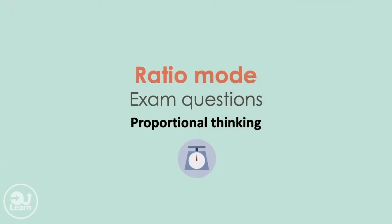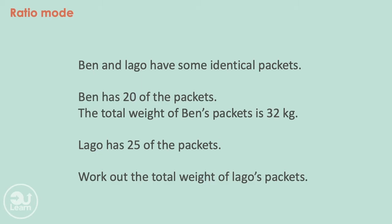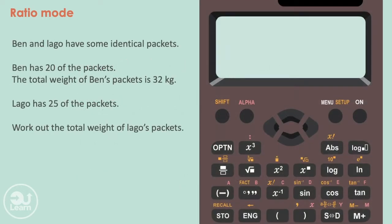Moving on to our next type of question, which is further proportional thinking. Ben and Largo have some identical packets. Ben has 20 of these packets. The total weight of Ben's packets is 32 kilograms. Largo has 25 of the packets. Work out the total weight of Largo's packets. As always, let's put our information into ratios and then into our calculators using the same process. Our ratios look like so. Therefore, our calculators look like this after putting in our values. Pressing equals, we end up with 40 kilograms. And that's it. The answer is 40 kilograms.